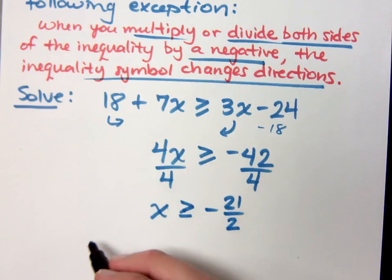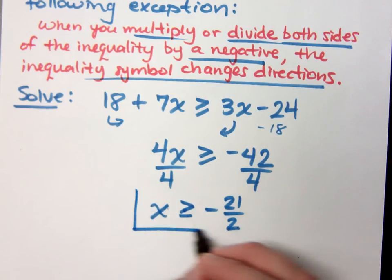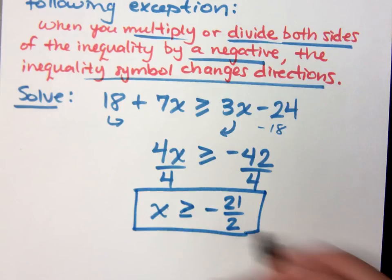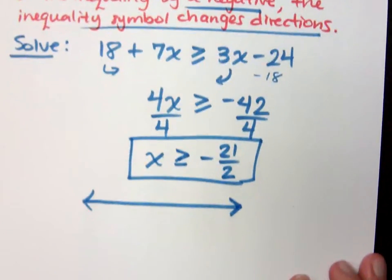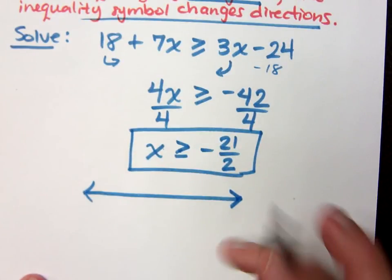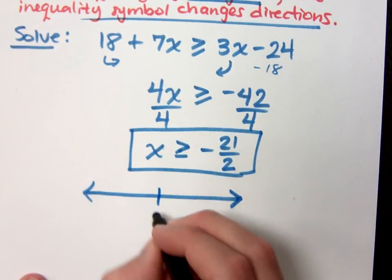Now, there are a lot of different ways of showing our solution. One is to just write this, but we also want to be able to graph this. If I'm graphing on a number line, there's only one number that I care about. It's not 0. It's the solution that I have right here, which is negative 21 over 2.